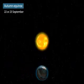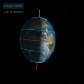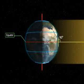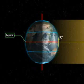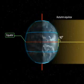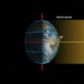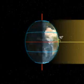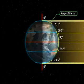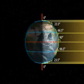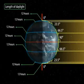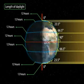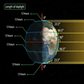Autumn equinox: On the 22nd or 23rd of September, the overhead Sun is over the equator again. The equator receives the largest amount of solar radiation. On this day, the northern hemisphere is in the autumn equinox, while the southern hemisphere is in the spring equinox. The angle of the Sun decreases towards the poles. The two hemispheres receive a similar amount of solar radiation, and the length of day and night is the same at all places on the Earth.